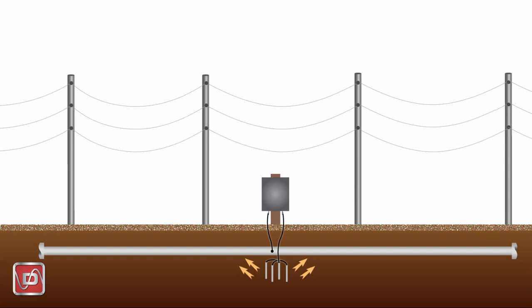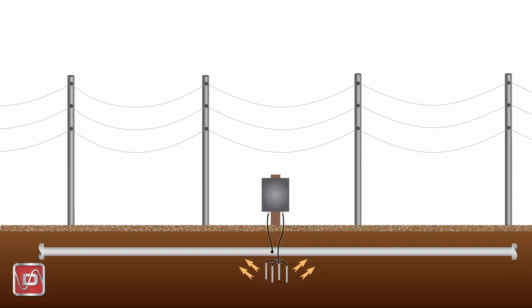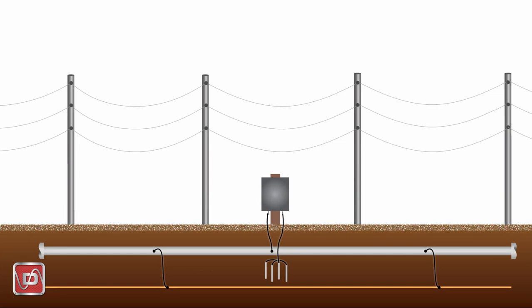Let's install a continuous mitigation system using zinc ribbon to drain the induced AC and provide safety grounding for any faults or lightning current that our pipe might encounter. Unfortunately, we solved one problem but created another.